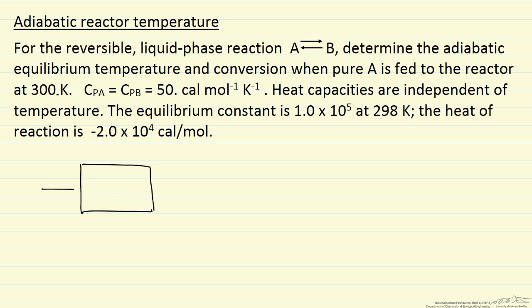In this case, we're assuming we're feeding in pure A at 300 Kelvin. We have some flow rate, though what that is doesn't matter for this. Adiabatic means Q is zero. And we're interested in the equilibrium mixture leaving. So we're going to run it to equilibrium and we want to know what's the final temperature leaving the reactor.